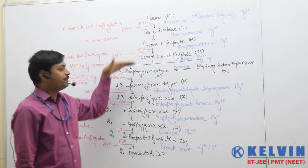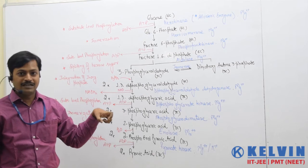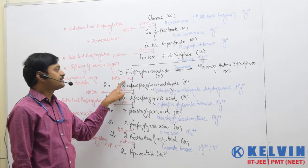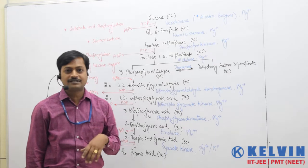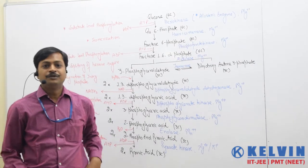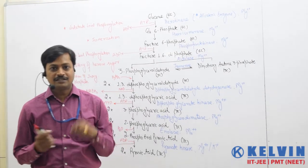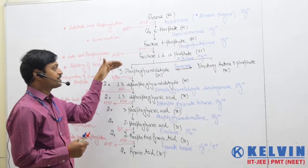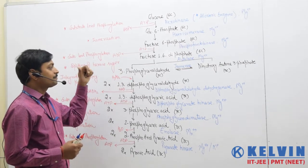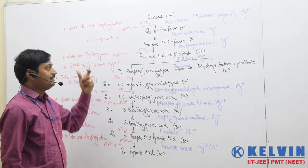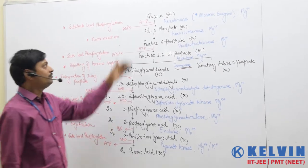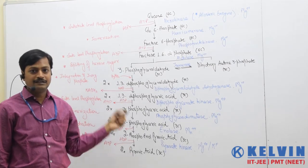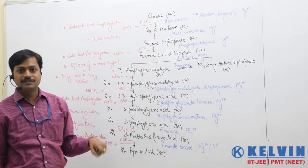During glycolysis we have 11 compounds. There is one step — the conversion of 3-phosphoglycerate into 1,3-diphosphoglycerate — which is a non-enzymatic step of the reaction. Finally, from one glucose molecule there are two molecules of pyruvic acid.